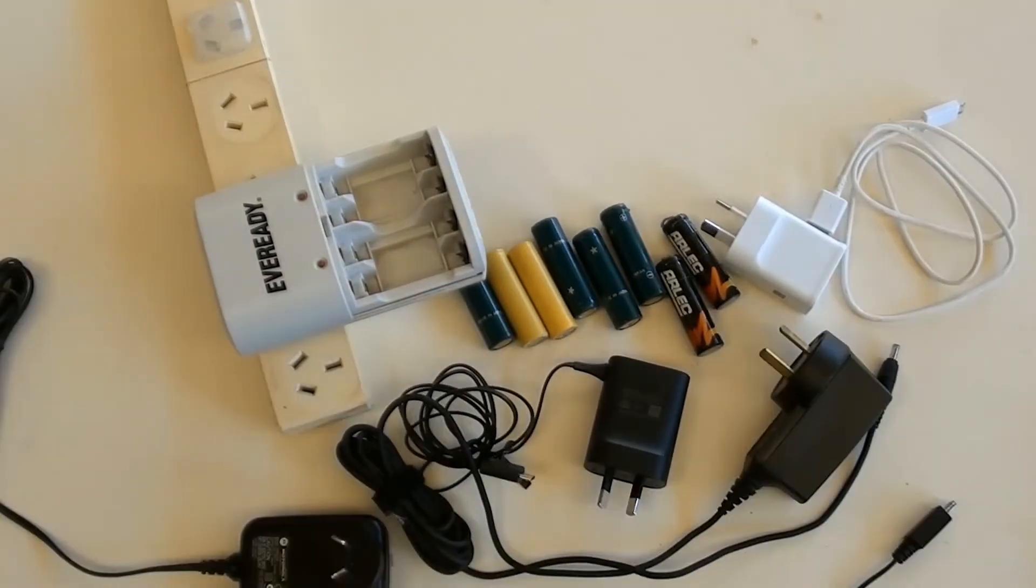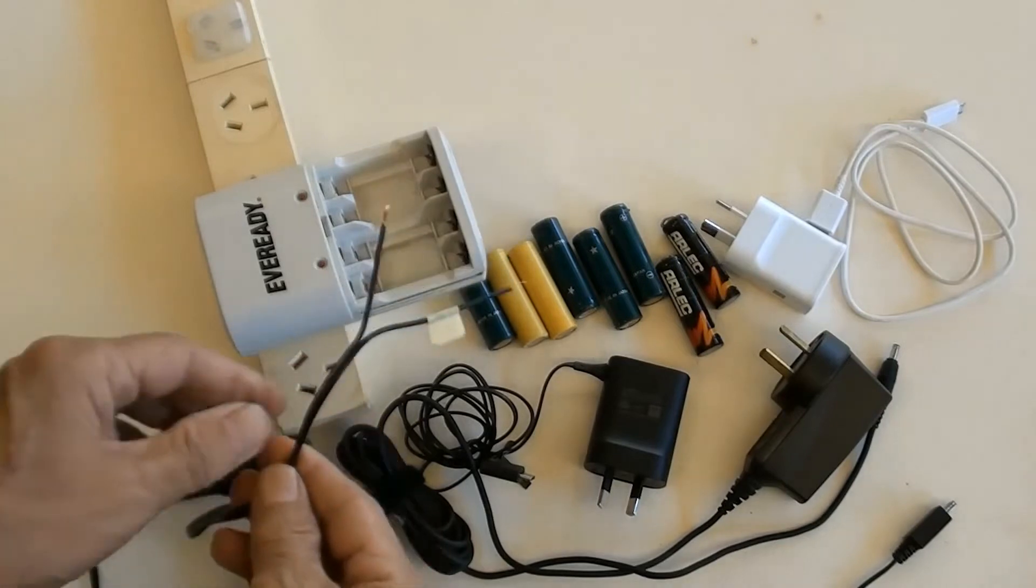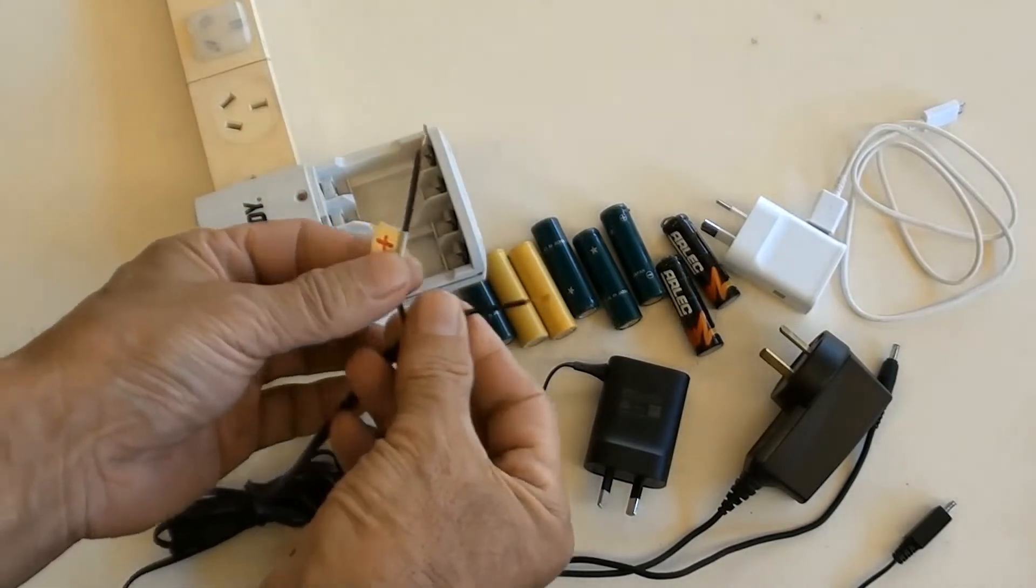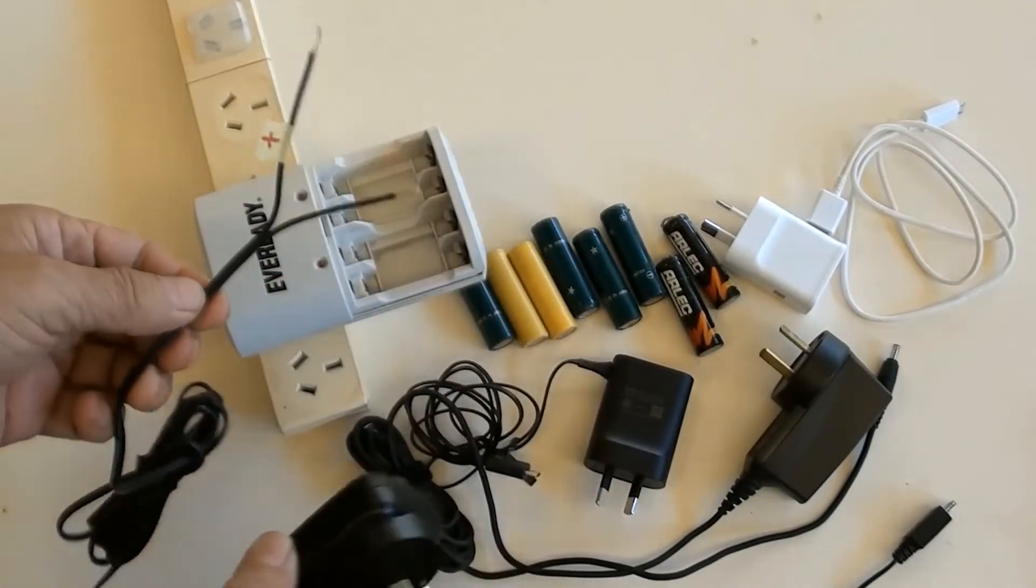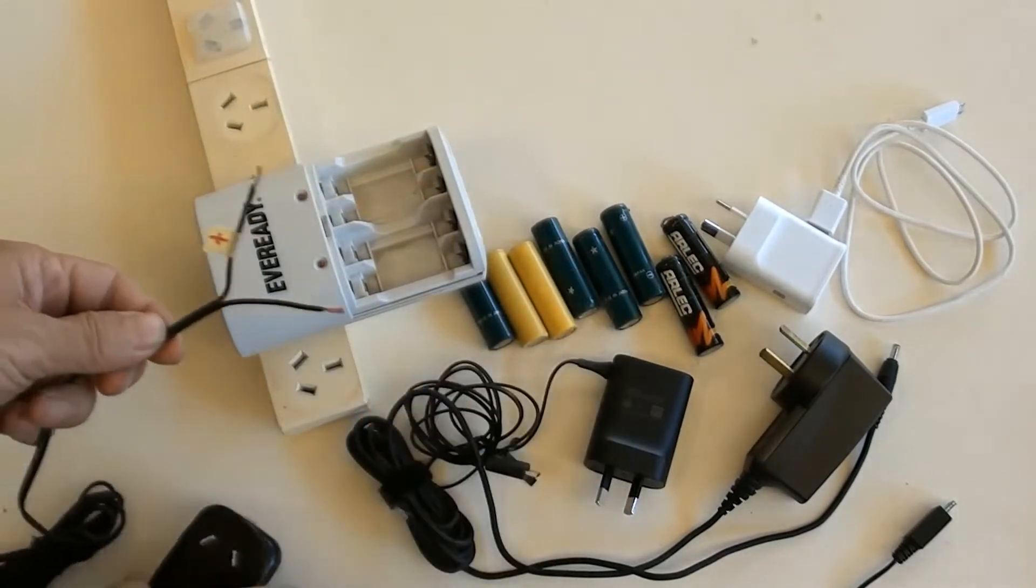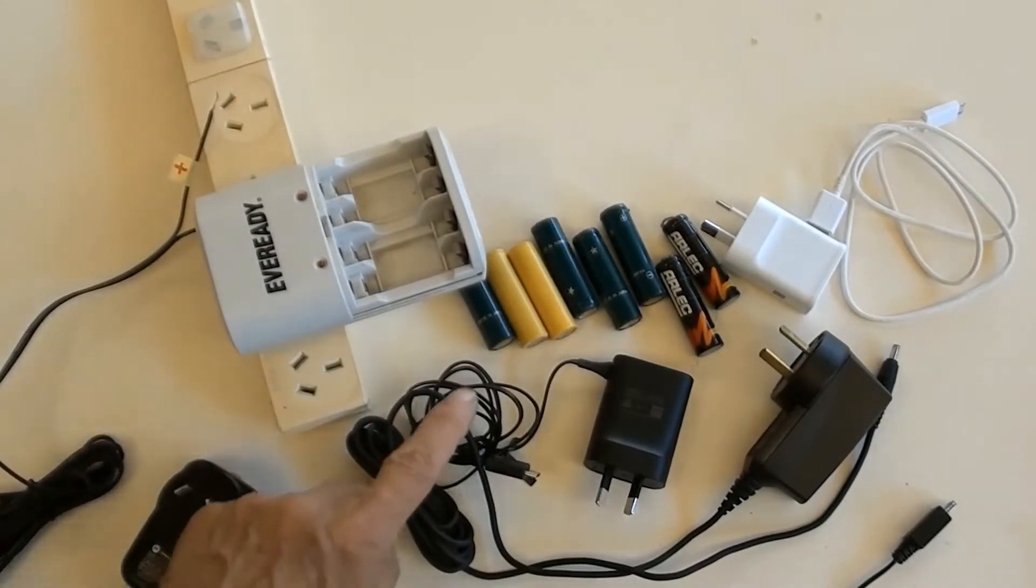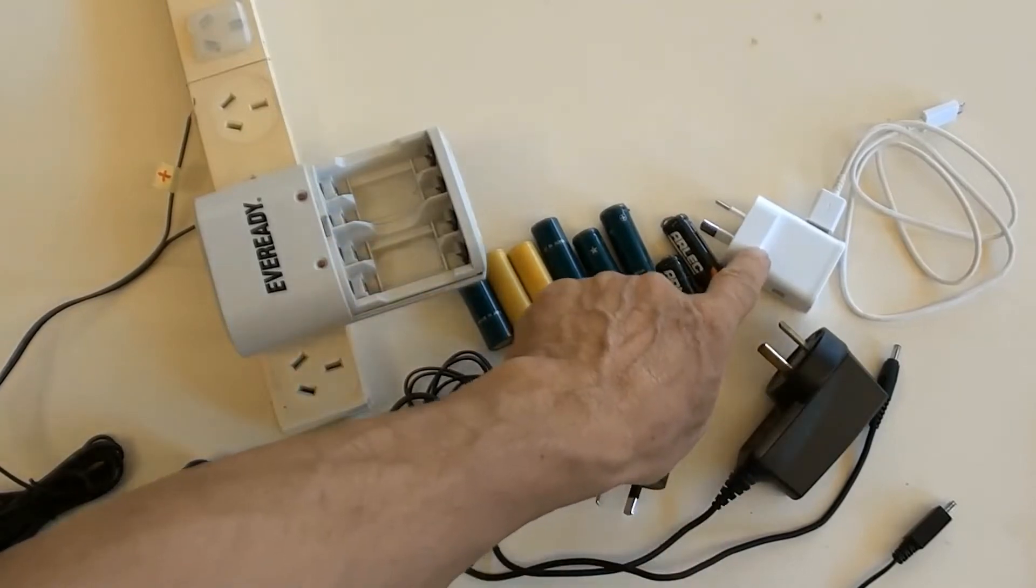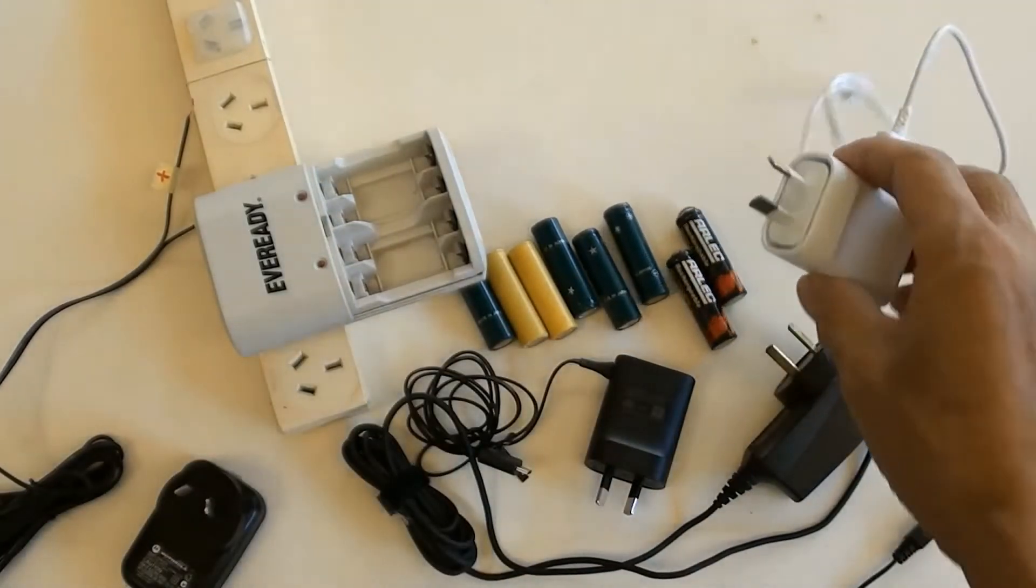Here are two wires which have been peeled off the insulation at their tips. One is DC positive and the other is negative from this charger. Those chargers are basically the same as the ones with wire cut off.